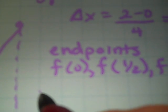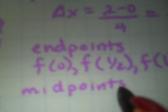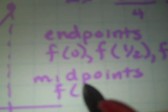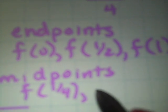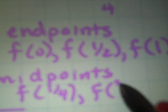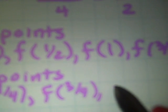Now we need to find our midpoints, because that's what we're going to use in our calculation. So the midpoint between 0 and 1 half is 1 fourth, and then all I need to do is add delta x to that, so f of 3 fourths. The midpoint between 1 and 3 halves is f of 5 fourths, and the last midpoint between 3 halves and 2 is f of 7 fourths.